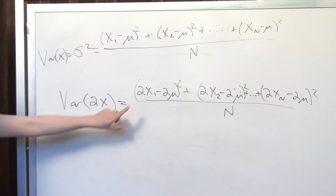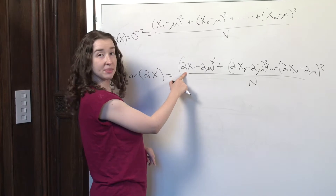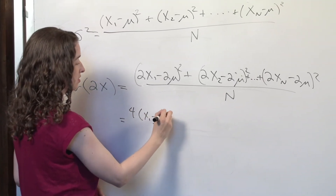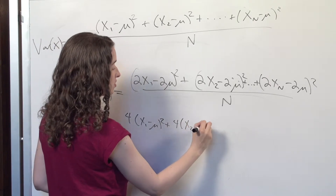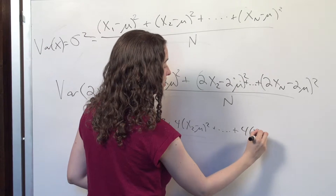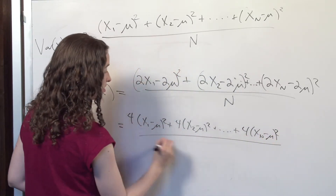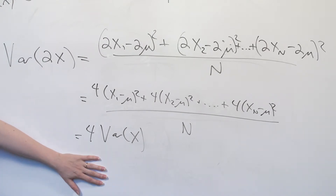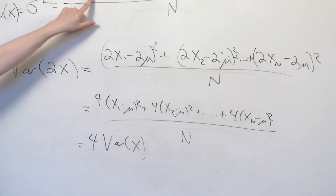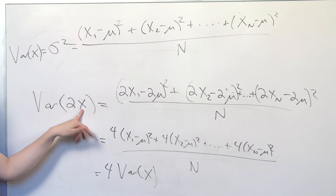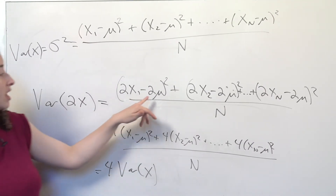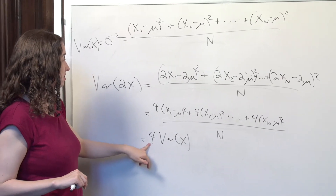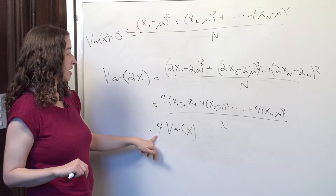What's going to happen to those 2s? I'm going to factor out the 2. What happens to the 2 when I factor it out? It gets squared. This is equal to 4 times (x1 minus mu) squared plus 4 times (x2 minus mu) squared plus 4 times the last person's income minus mu squared, all over n. In other words, this equals 4 times the original variance of x. Because variance is on a squared scale — it's about how far a value is from its mean squared — if we multiply all values in the population by some number, we also multiply the mean by that same number by the linearity property of expectation, and therefore we multiply the variance by that constant squared.